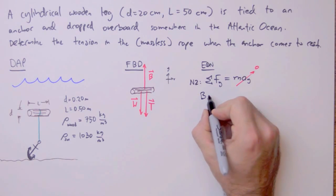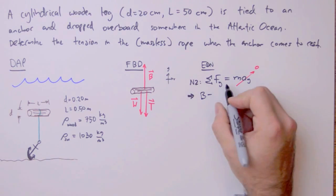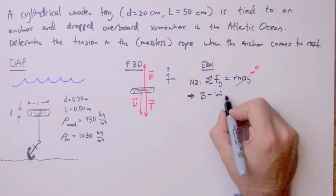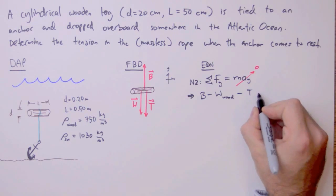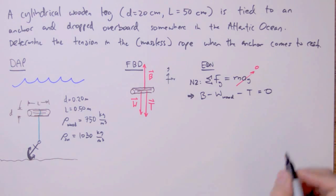And so we sum the forces. In the positive y direction, we have b, the buoyant force. And in the negative y direction, we have w, the weight of the log. I'm going to just write it as the weight of the wood. And t, the tension in the rope. That's all equal to 0.